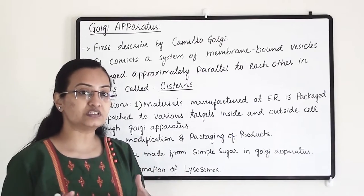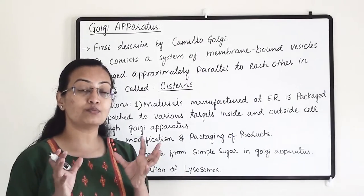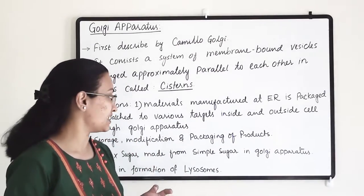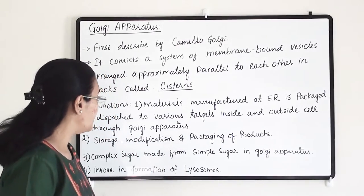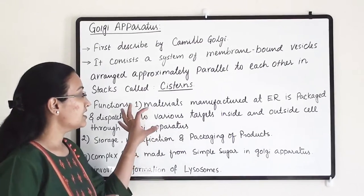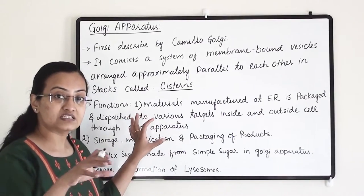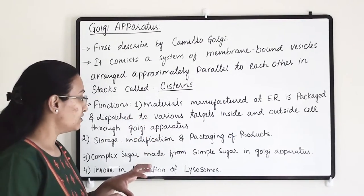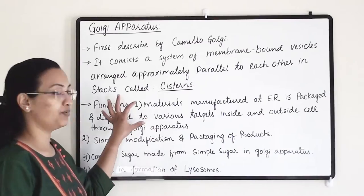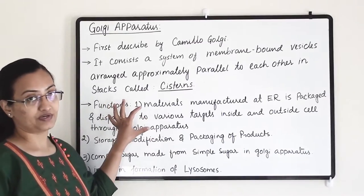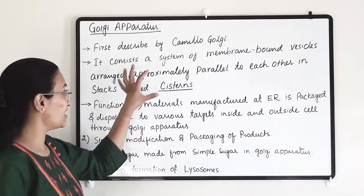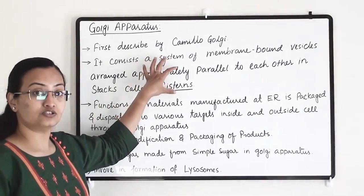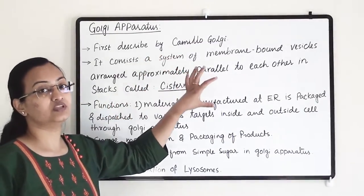All these materials manufactured at ER sites are sent to different sites of the cell with the help of the Golgi apparatus, and that is why the cisterns need to connect with the ER.